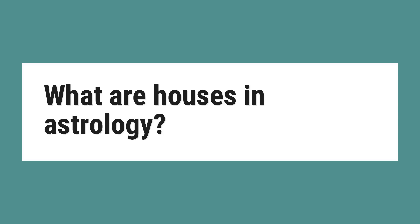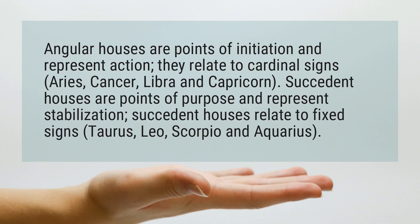What are Houses in Astrology? Angular Houses are points of initiation and represent action. They relate to cardinal signs: Aries, Cancer, Libra, and Capricorn.